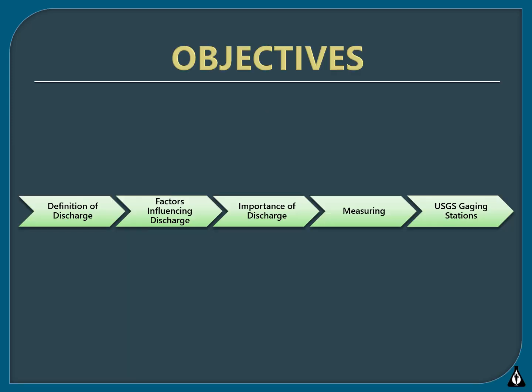In the stream discharge chapter, we explain how stream discharge plays an important role in determining the characteristics of a stream and why measuring flow is a critical part of data collection. Our goal is to provide the background and methodologies you need to understand and measure discharge at your stream site. We will define stream discharge, what factors influence stream discharge, the importance of measuring it, how to measure it, and how to use USGS gauging stations to gather discharge data.